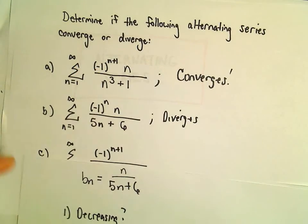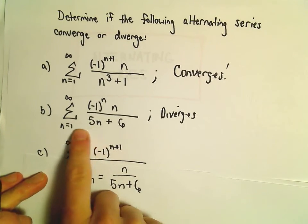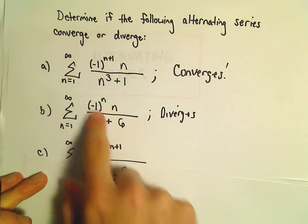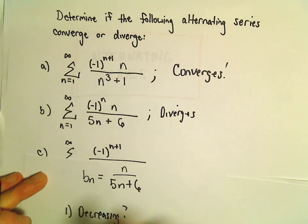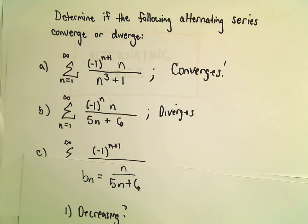And you can do the same thing at the very beginning. You could simply use the test for divergence. And when you take the limit of this stuff, it doesn't equal 0. So again, that automatically says our series diverges.